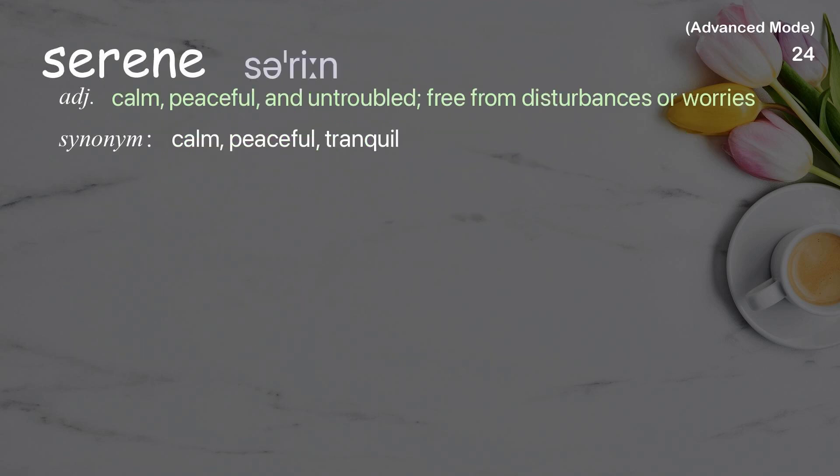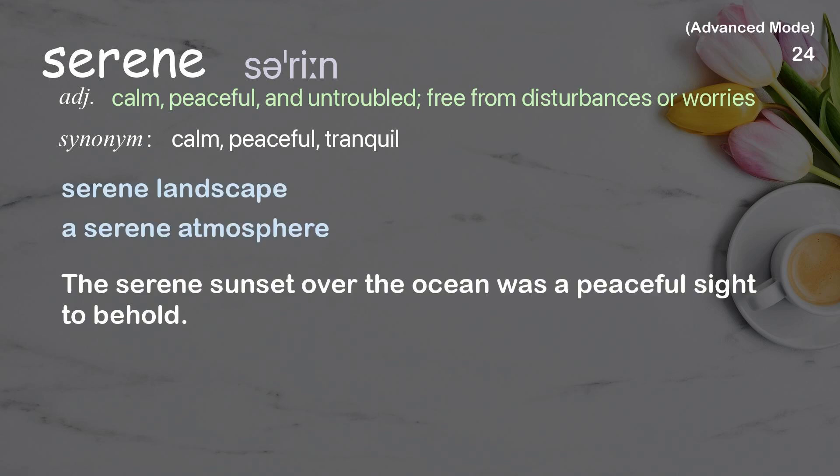Serene. Calm, peaceful, and untroubled; free from disturbances or worries. Examples: serene landscape, a serene atmosphere. The serene sunset over the ocean was a peaceful sight to behold.